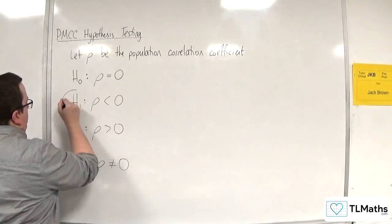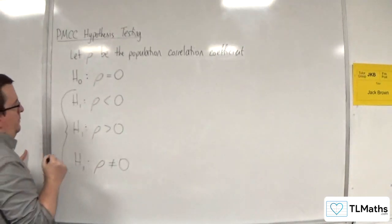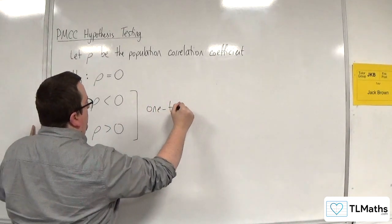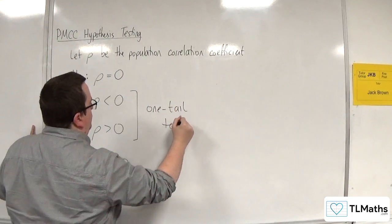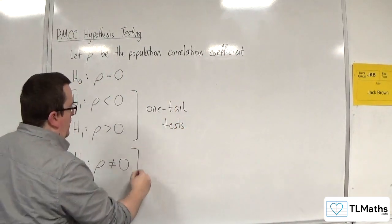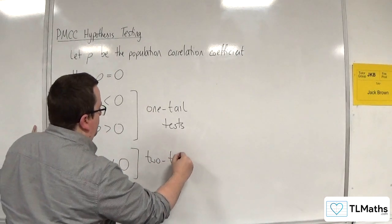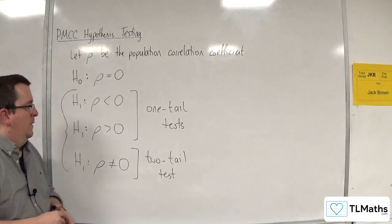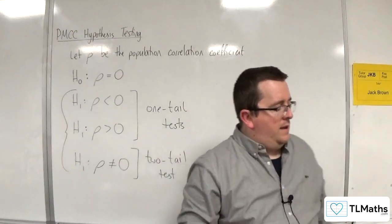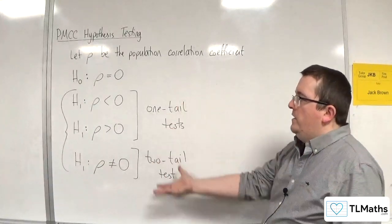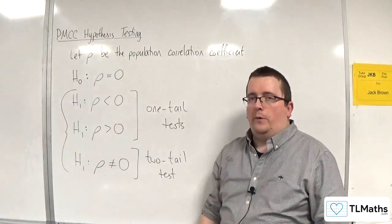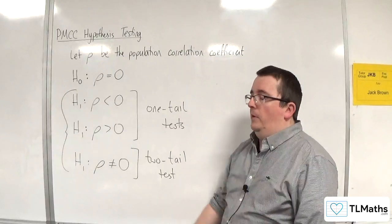So these are three alternatives. These two are both one-tailed tests, and this one is a two-tailed test. And so these are the possible alternative hypotheses, and this is the null hypothesis that we are going to use in this hypothesis test.